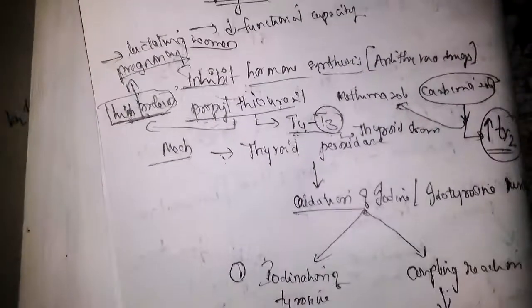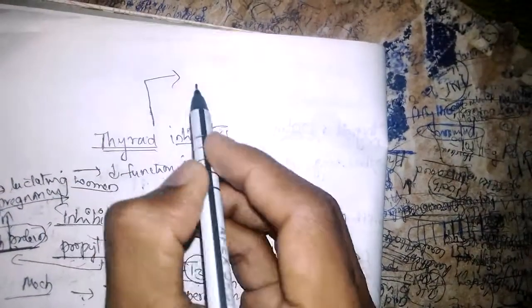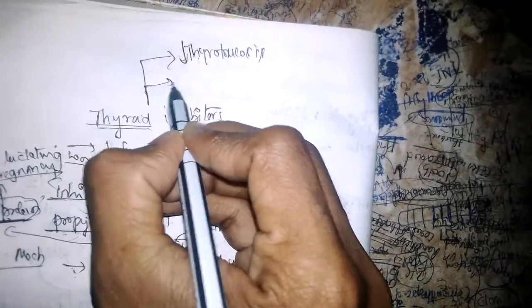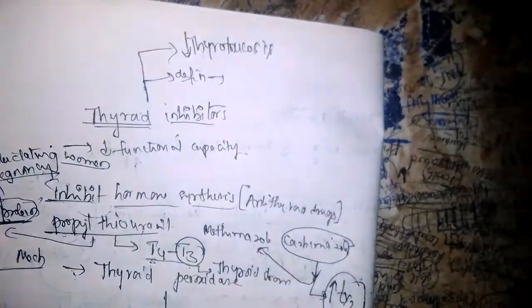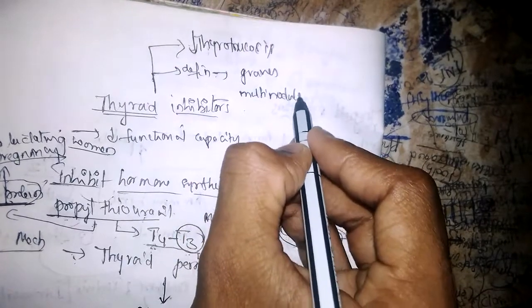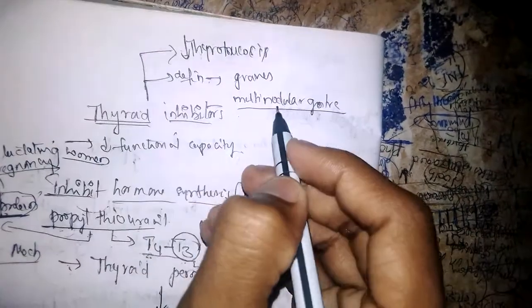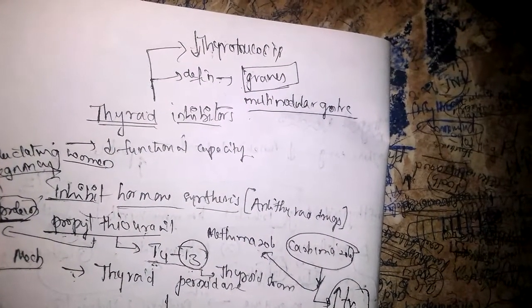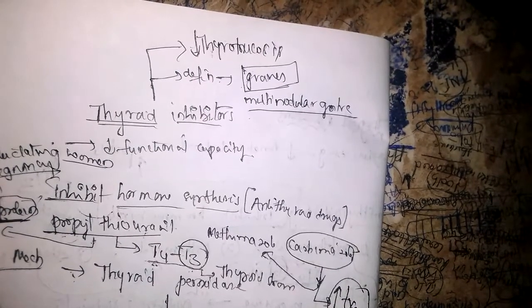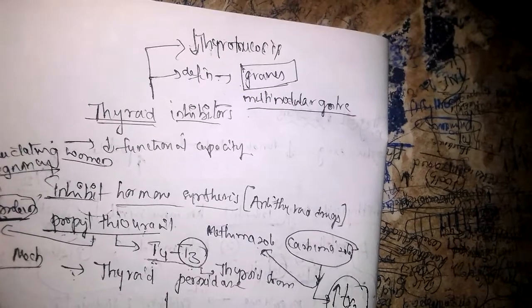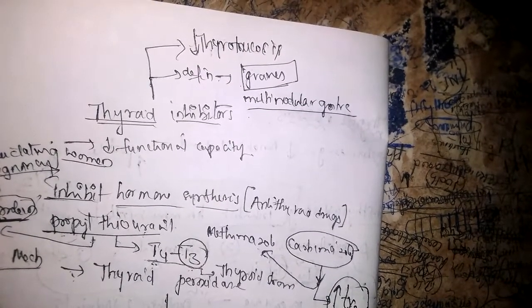Uses of thyroid inhibitors: they inhibit thyrotoxicosis in both Graves' disease as well as in multinodular goiter. They are used as definitive therapy for Graves' disease and multinodular goiter. In goiter, relapse is possible even after surgery, so antithyroid drugs are the best option. If the patient does not respond to radioactive iodine, these thyroid inhibitors can be used.